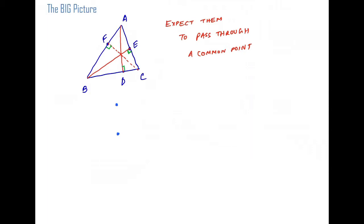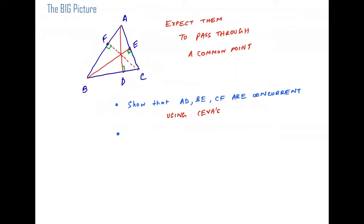The first strategy is to show that AD, BE, and CF are concurrent using Ceva's theorem. We will actually use the converse of Ceva's theorem — it's true both ways. The second strategy is angle chasing, which is almost always useful in this kind of elementary problem.